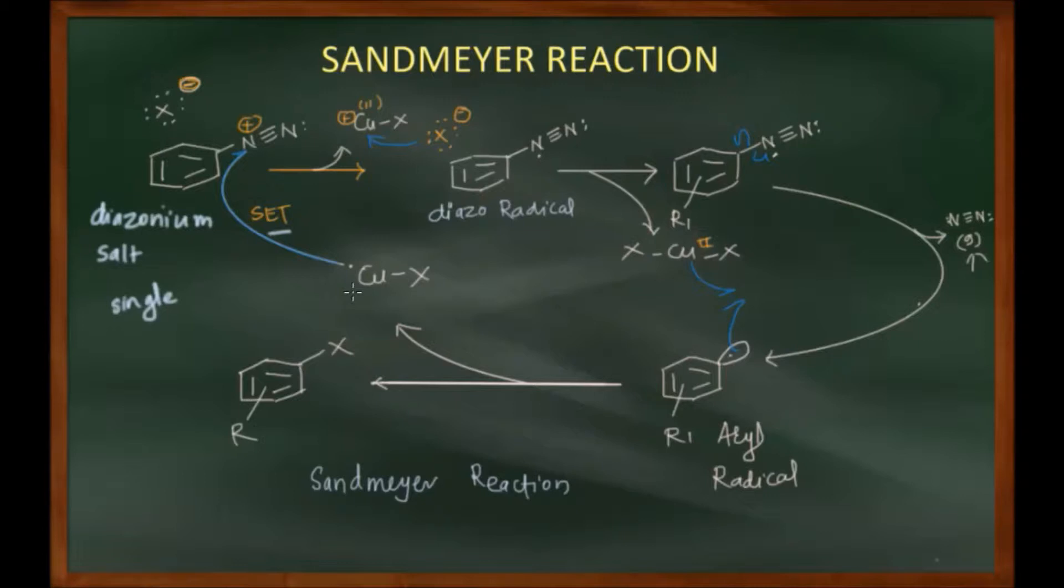Once this freshly prepared diazonium salt is further mixed with cuprous chloride or bromide, it results in the replacement of the diazonium group by chloride or bromide. This reaction for the synthesis of haloarenes from a diazonium salt is popularly known as Sandmeyer reaction.